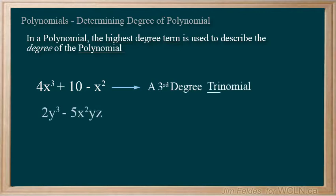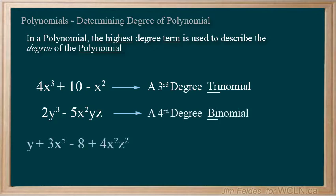The next example has a fourth degree term and two terms, making it a fourth degree binomial. The last example is a fifth degree polynomial.